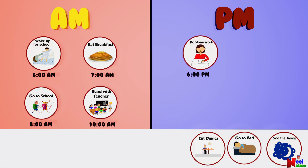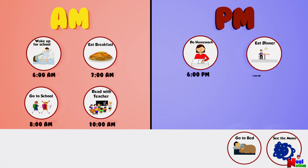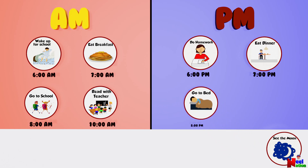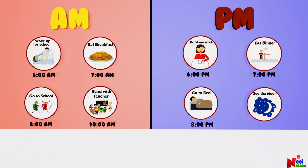When do you have your dinner? In the PM — at 7 PM. When do you go to bed? In the PM — at 8 PM. When do you see the moon? In the PM.